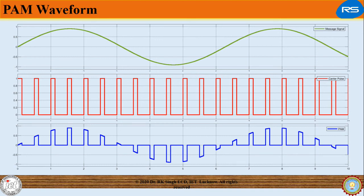There are two types of PAM. One is double-polarity PAM which is self-explanatory. Second is single-polarity PAM in which a fixed DC level is added to the signal to ensure that the pulses are always positive.